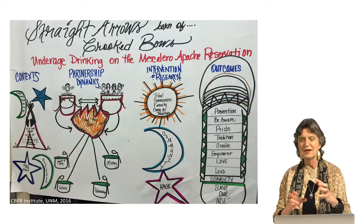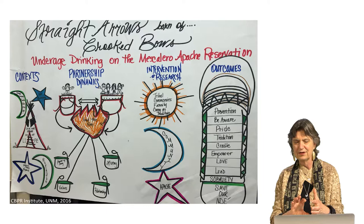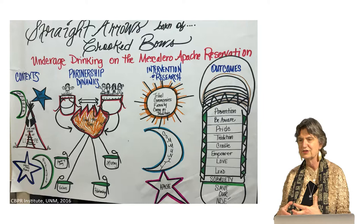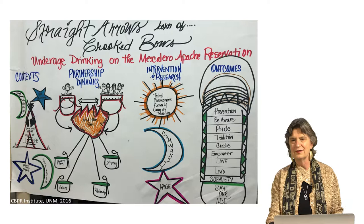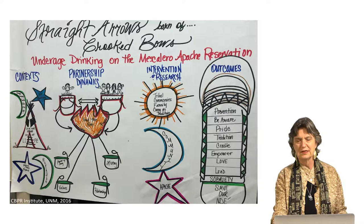The tribal community explained how it impacted their intervention and the outcomes they wanted to see: prevention, awareness, pride, tradition, empowerment, love, and sobriety — all in one package. It was kind of a vision statement at the same time that it was trying to look at the different stages of a CBPR path to their own outcomes.